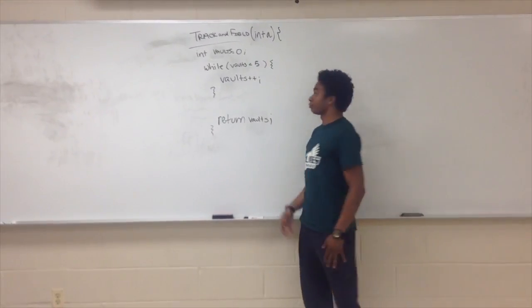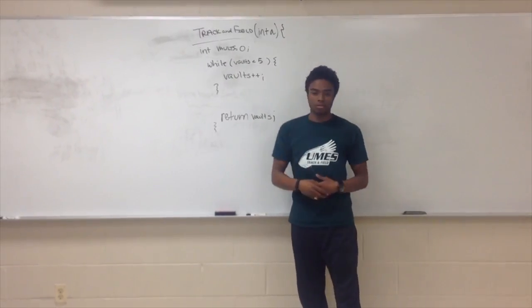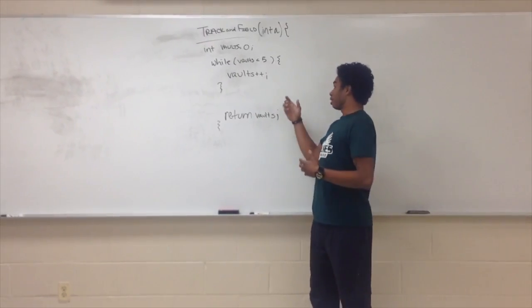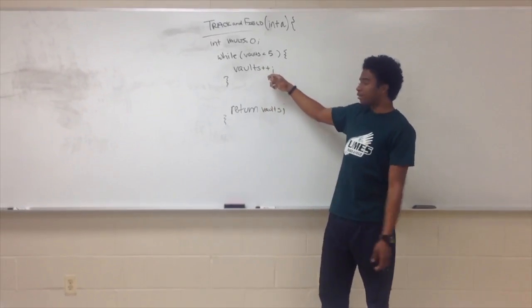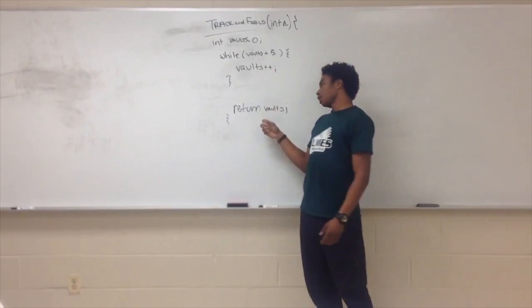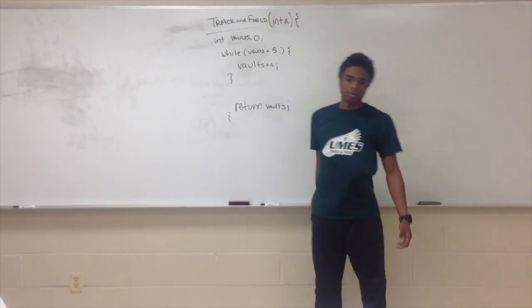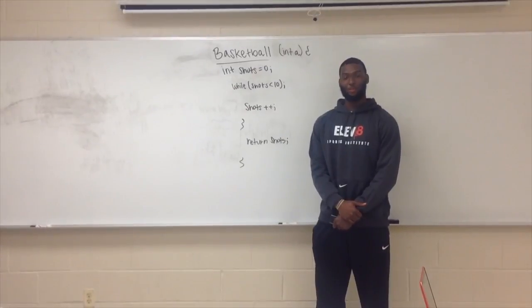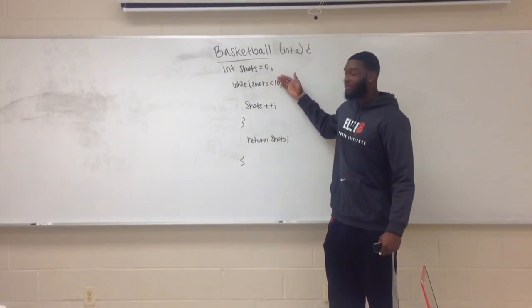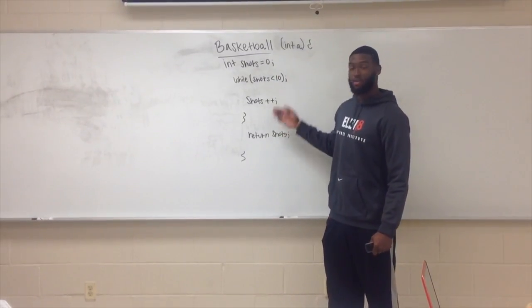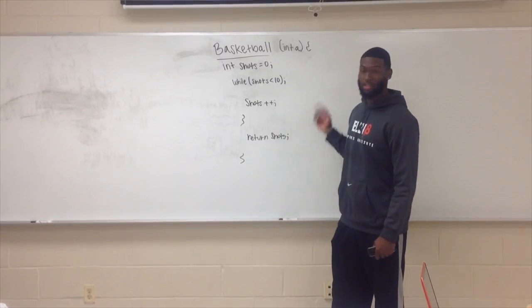Track and field is the best sport around. It's going to start at zero, then vote five times — every time it's incremented, the amount will return back. You have chosen basketball: shots will equal zero. While shooting 10 shots, they will increment and it will return shots to the scoreboard.